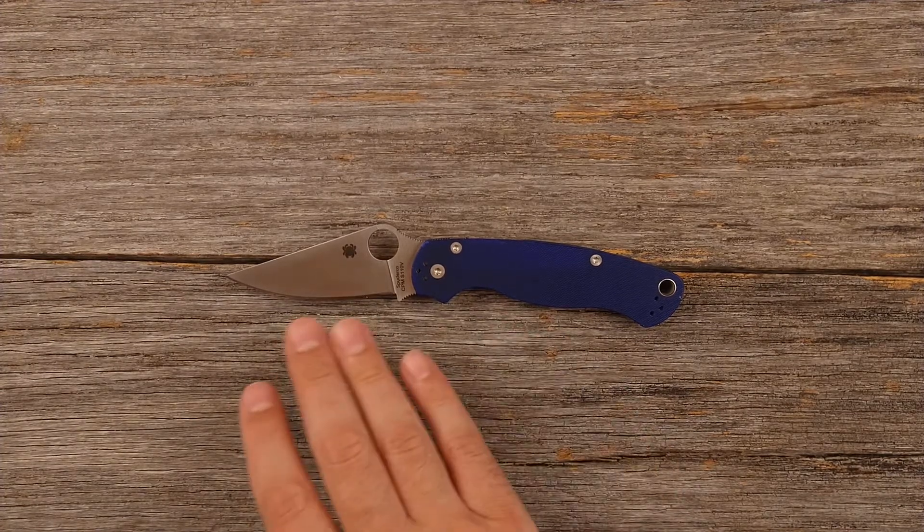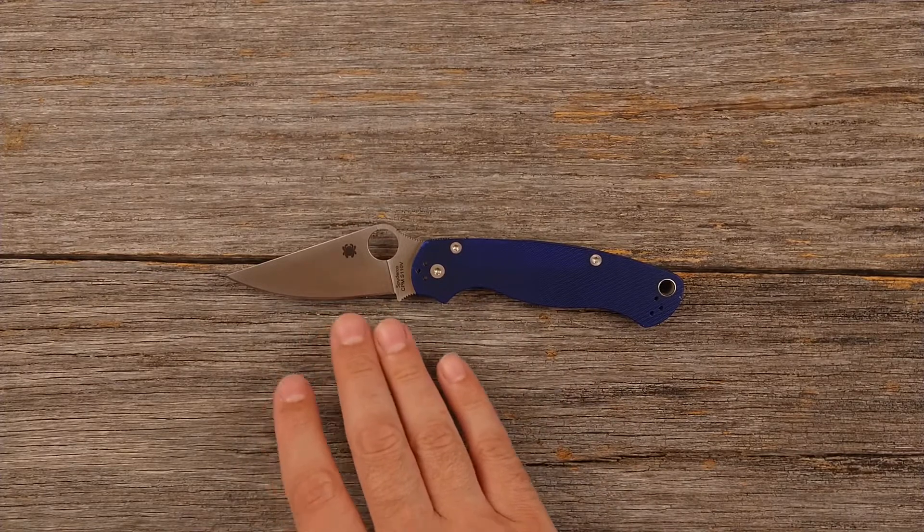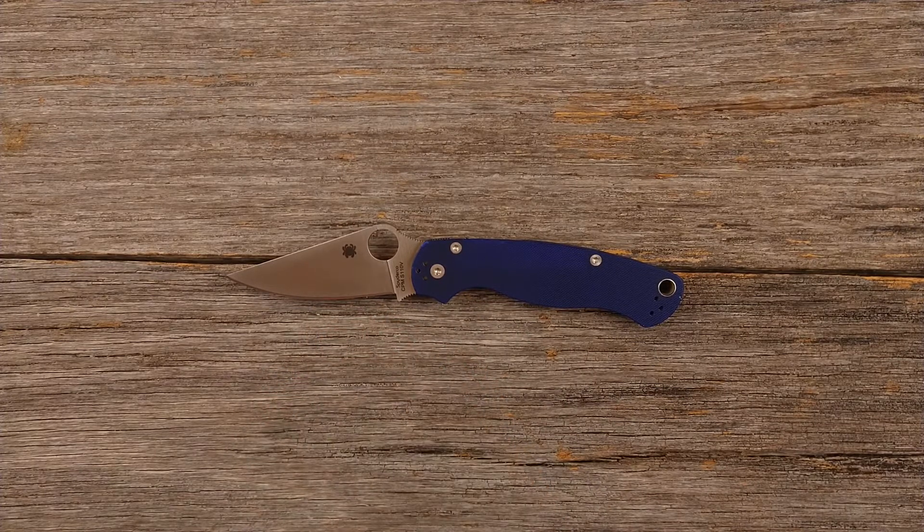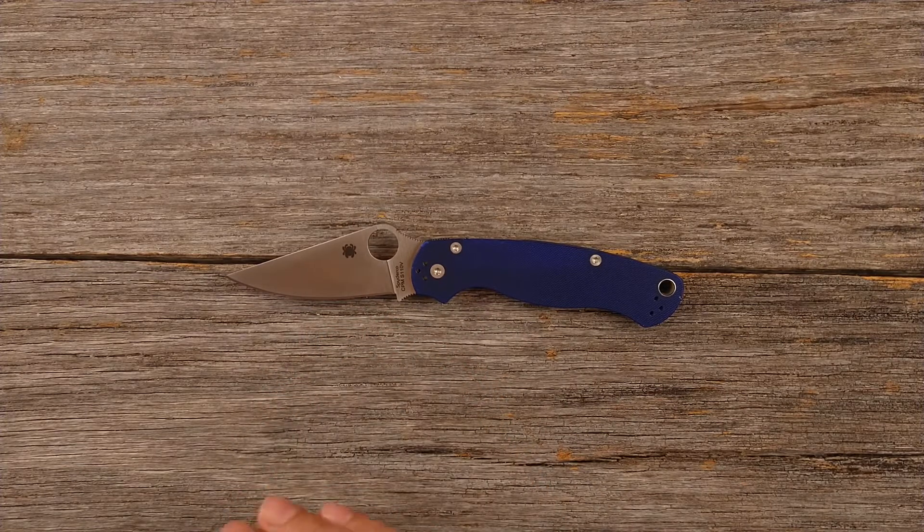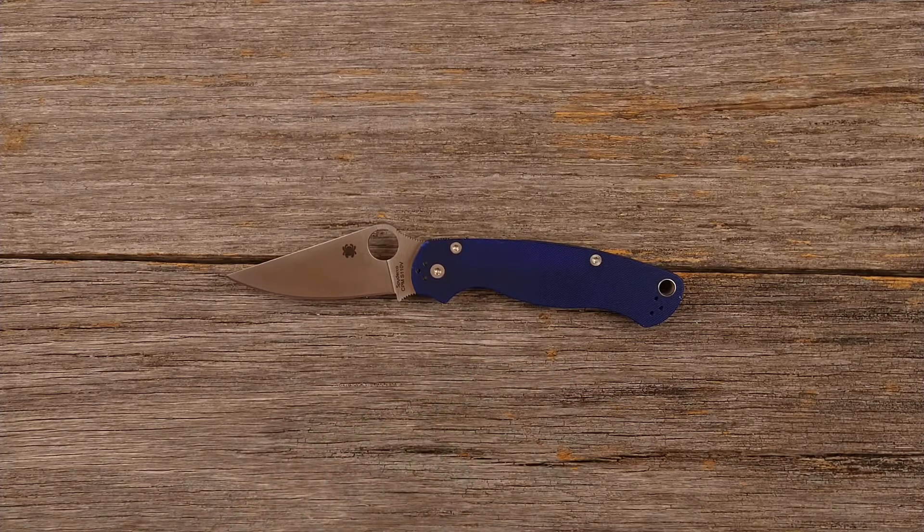This color handle scale only comes with the knives that Spyderco issues in the S110V. So you can immediately know what blade steel's in the knife when you see those handle scales.